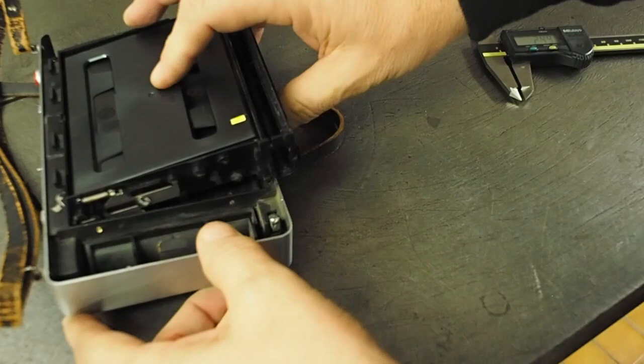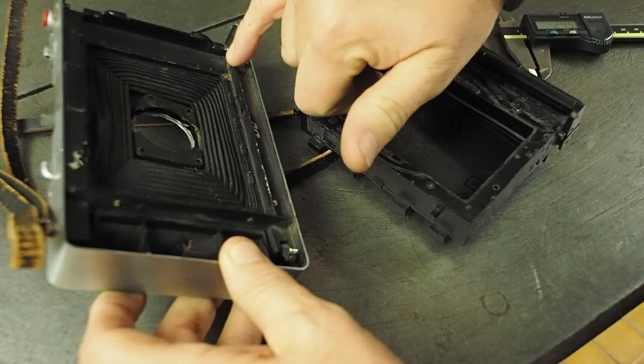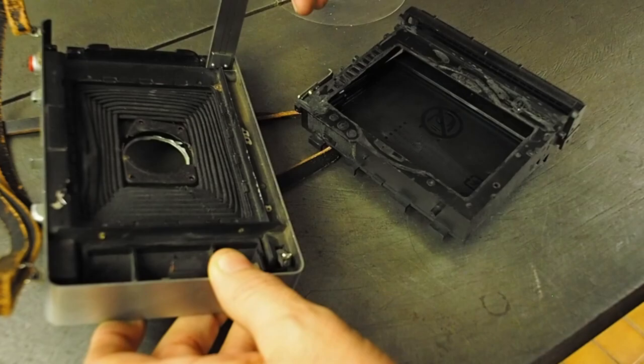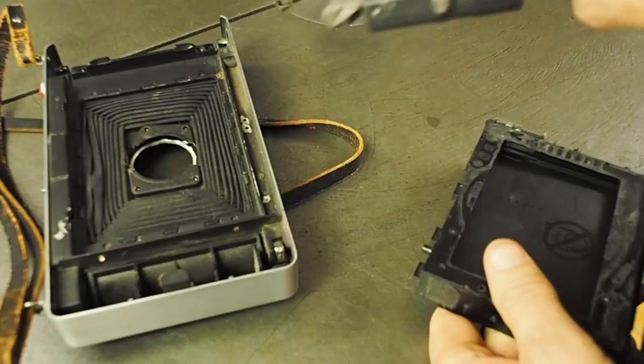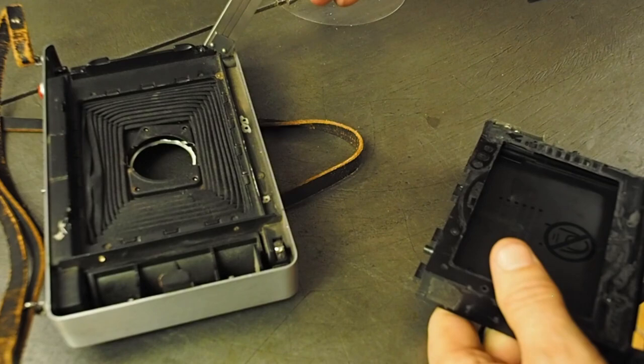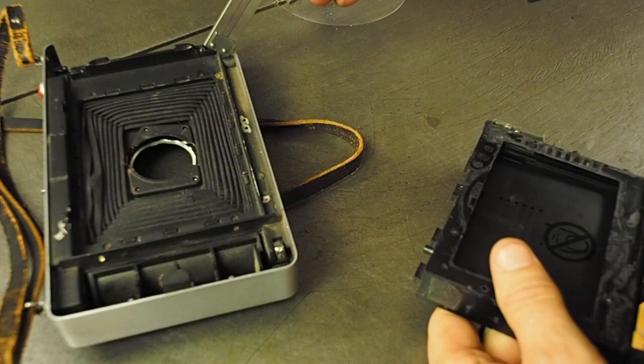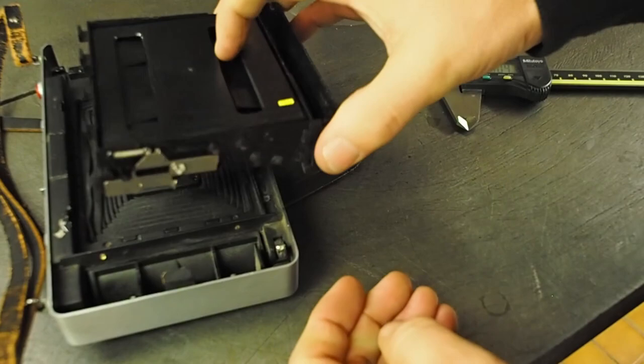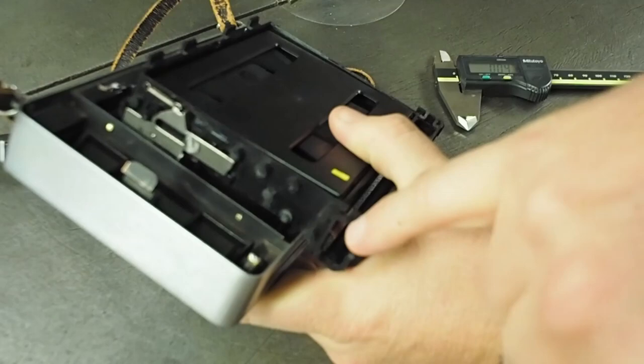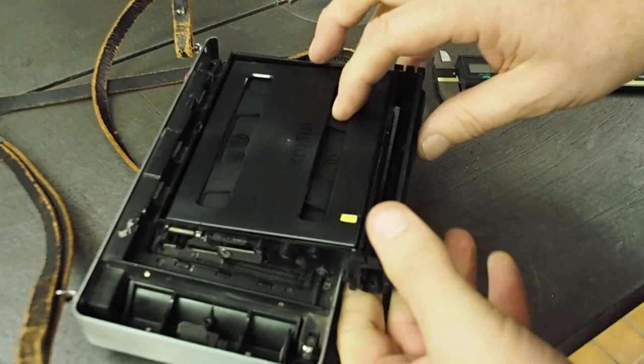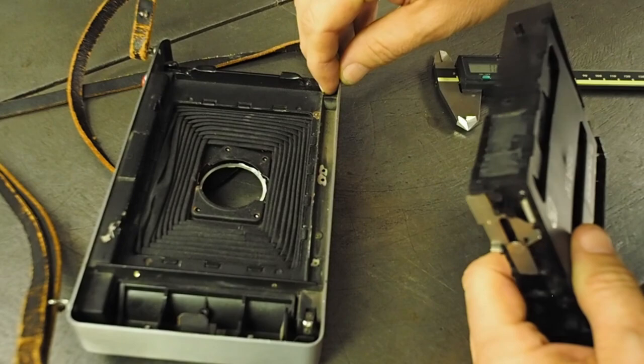To fit that film pack upside down in the land camera, we would need to mill away those ribs across here. And we will still have the film plane at about two and a half millimeters further back than it was originally. Once you mill away those channels, which includes the tripod mount and part of the bottom channel, you could then insert the pack such that the whole roller mechanism hangs out the bottom of the camera. This way we could move the focal plane to within two and a half millimeters of its original position.